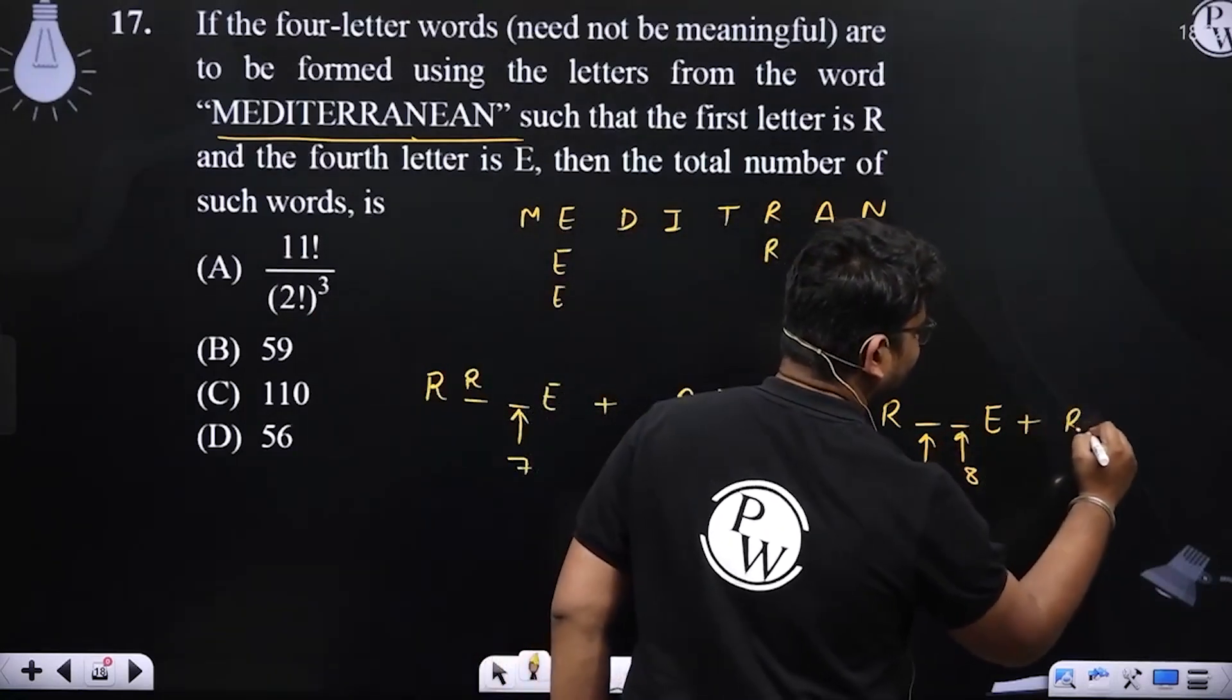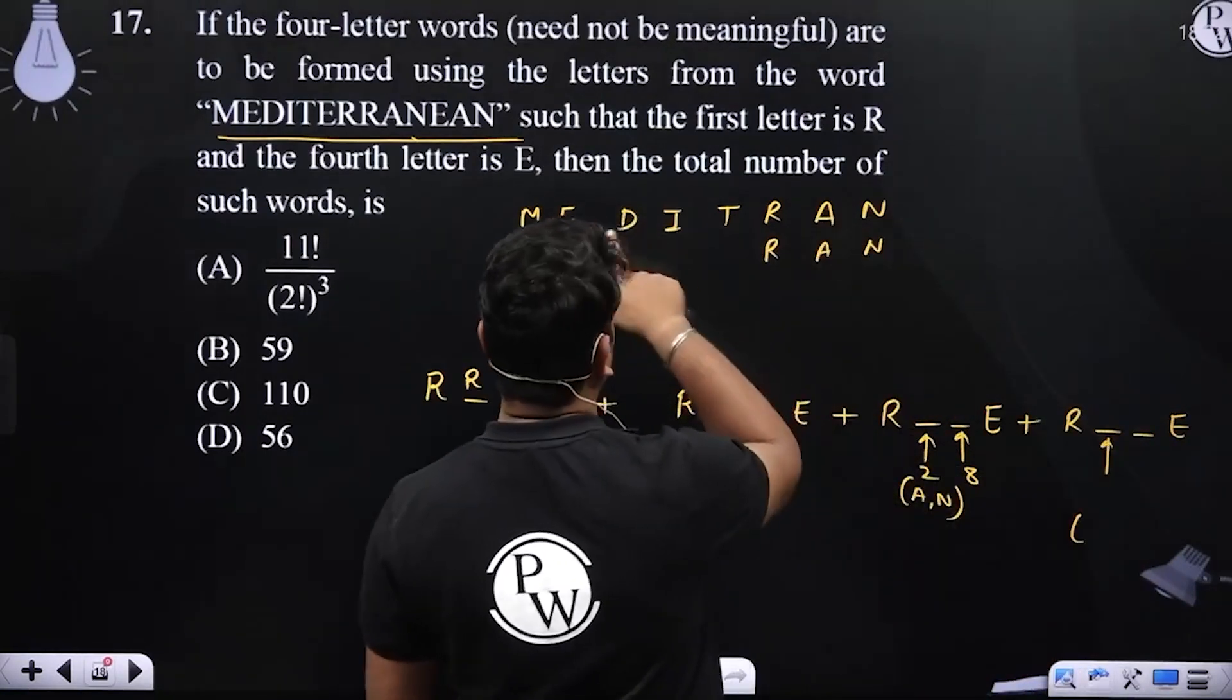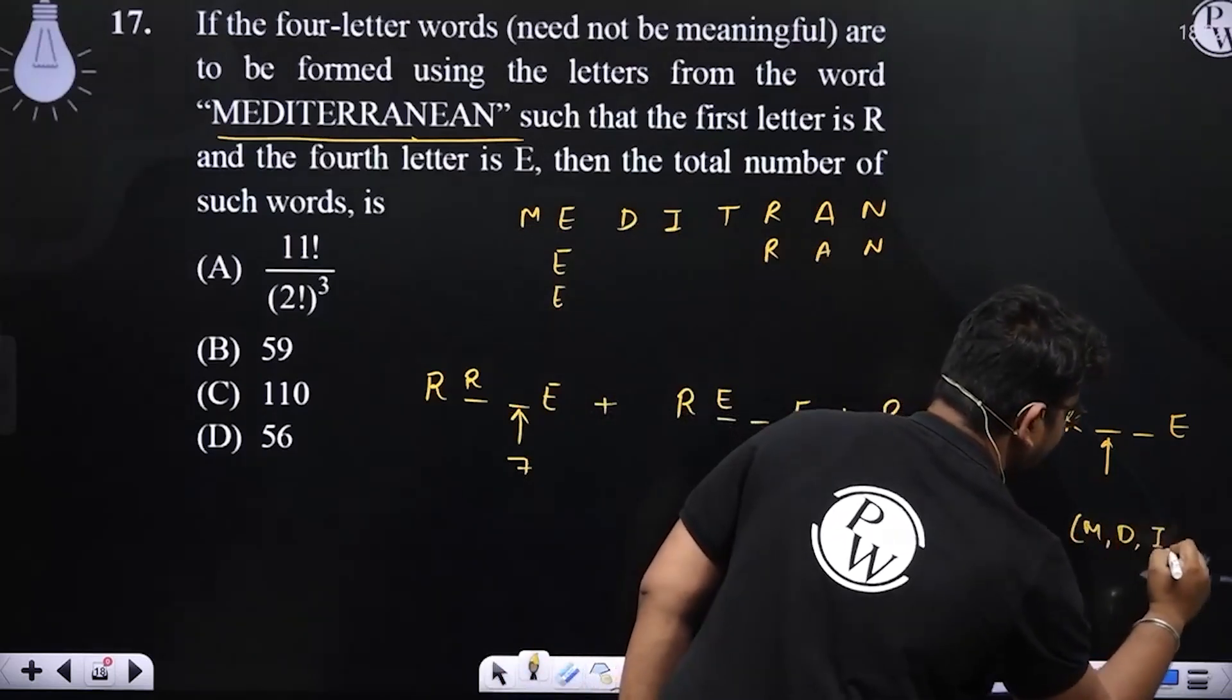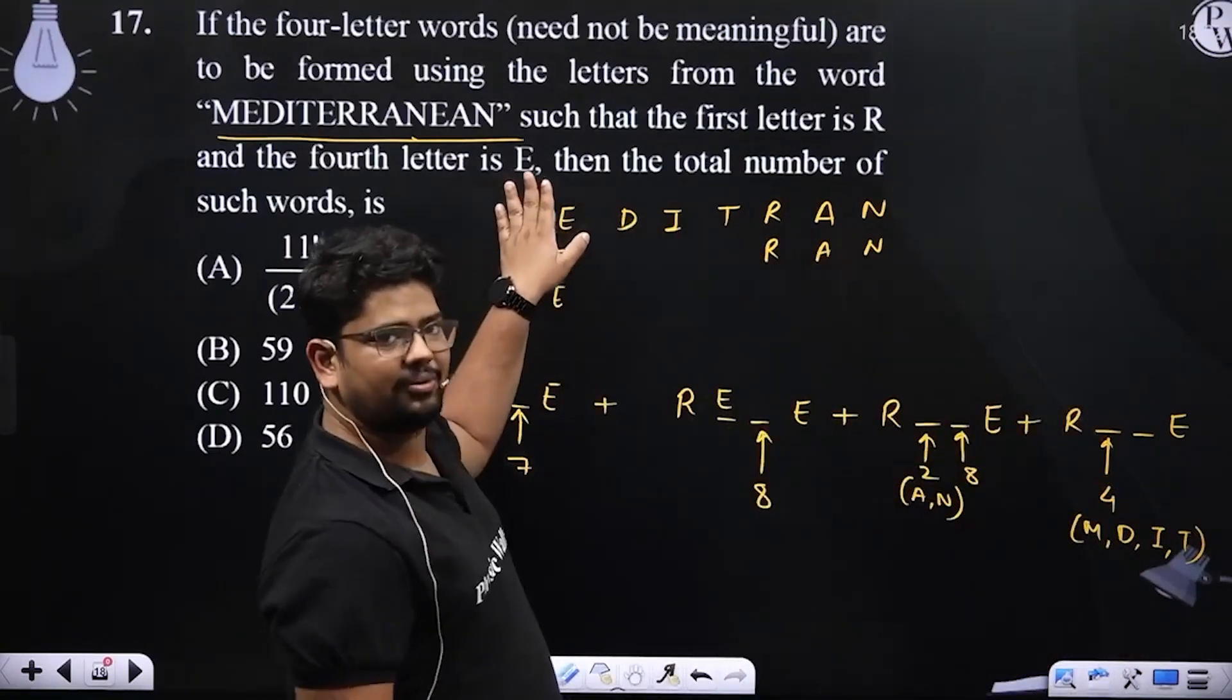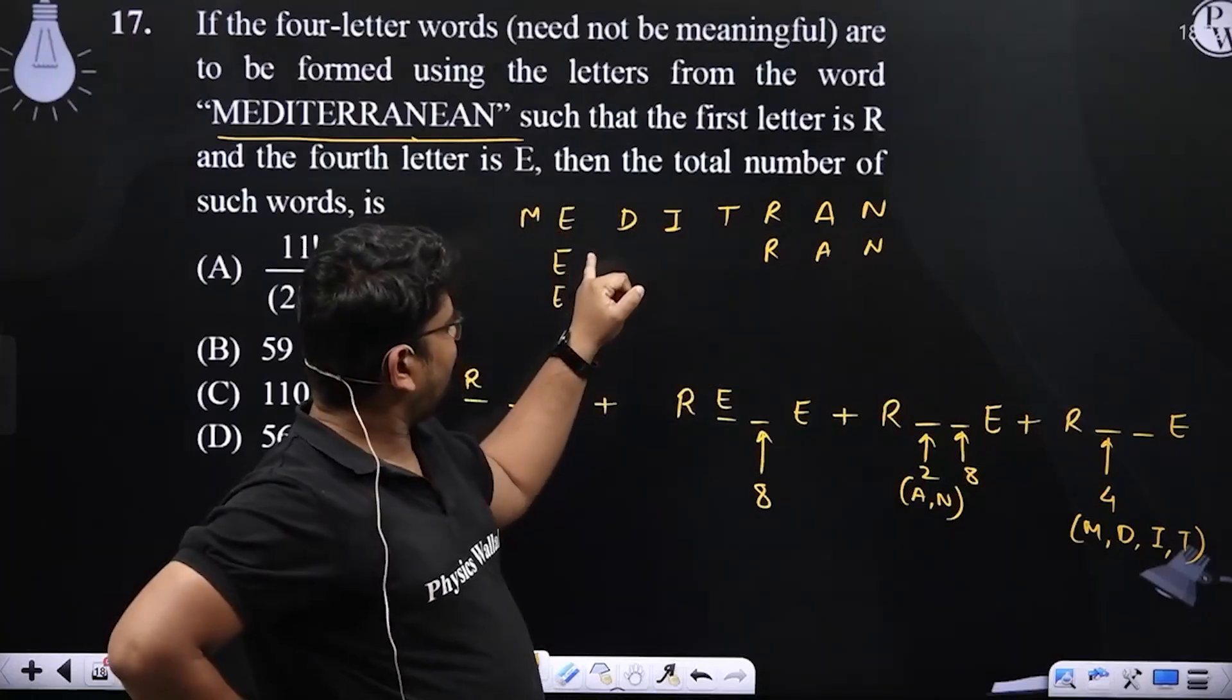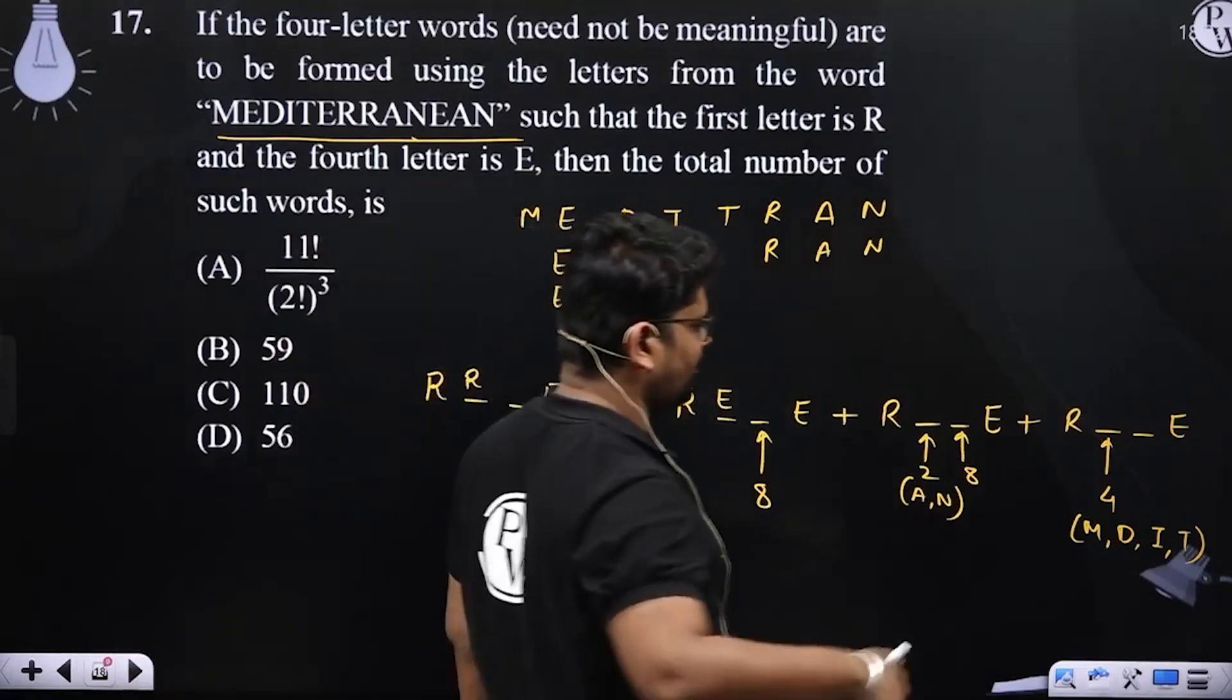Last case, we have to write this place. This place is M, D, I, T... E, E, D, I, T, R, A, N. So seven choices here.